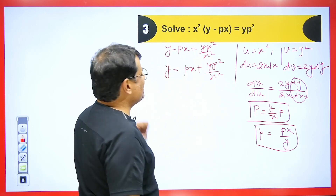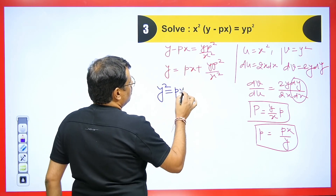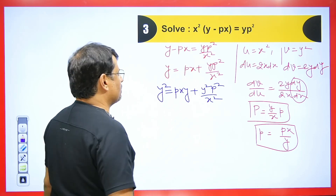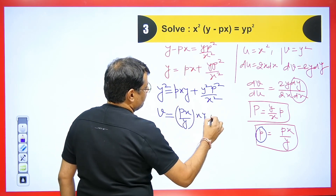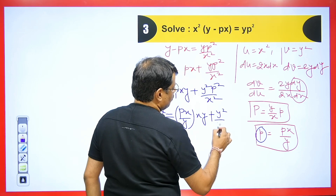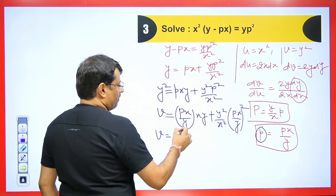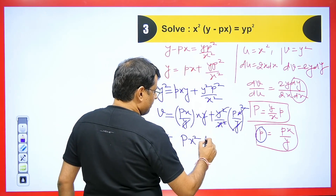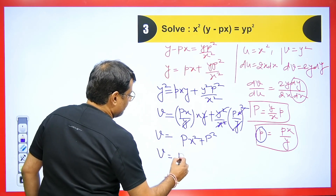After multiplying by y we get: y² = P·(x/y)·xy + y²·(P·x/y)²/x². Substituting: y cancels with y giving P·x², and y² cancels with y² and x² cancels with x² in the second term giving P². So we get: v = P·u + P², which is exactly the Clairaut's form with v in place of y and u in place of x.